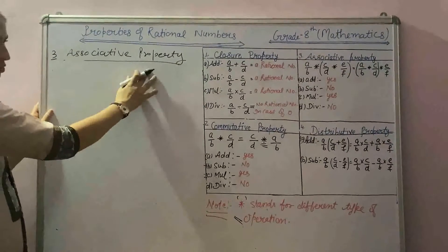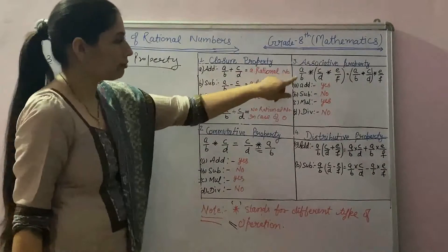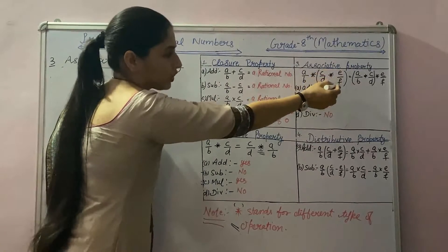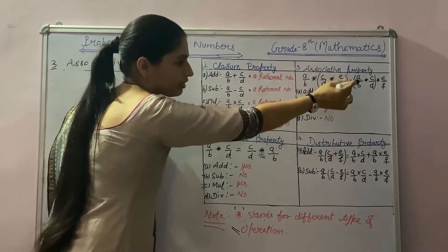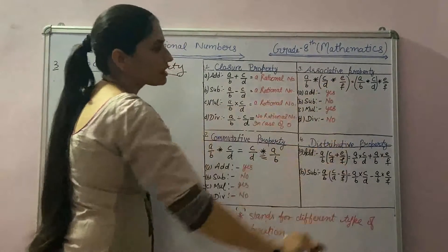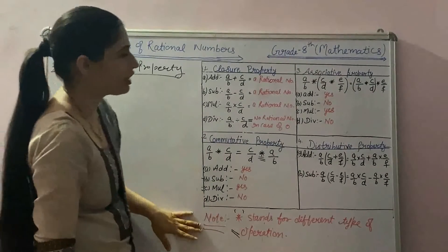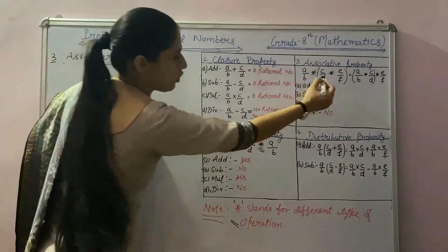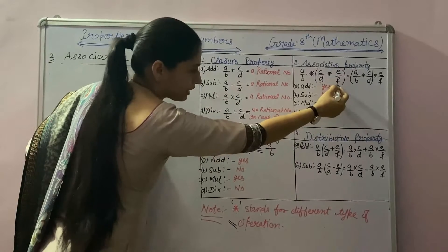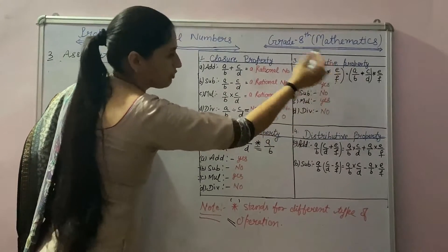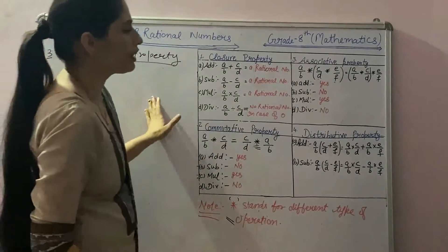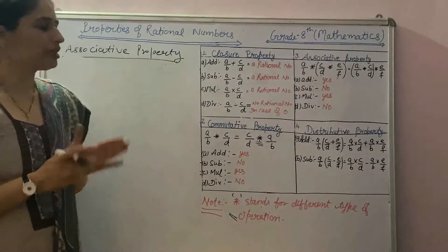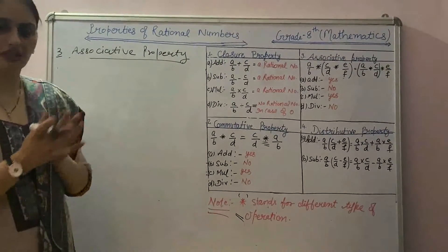Let's discuss associative property. What is associative property? It states that A by B star (C by D star E by F) is equal to (A by B star C by D) star E by F, where star stands for different operations. The brackets mean: first we apply the operation on the second and third rational numbers, and then apply the operation with the first number. On the right-hand side, first we apply the operation on the first and second terms, and then apply the operation with the result on the third number.